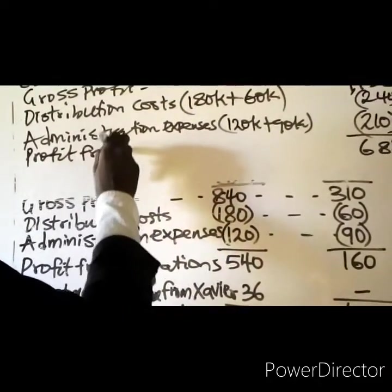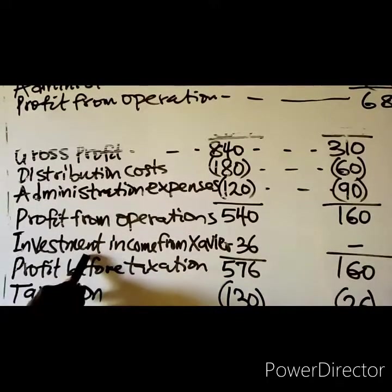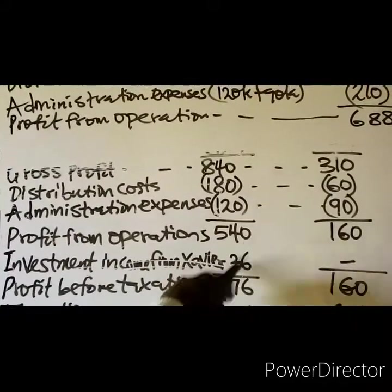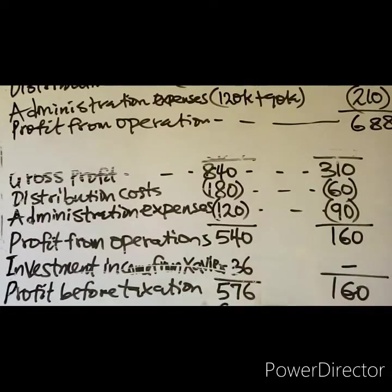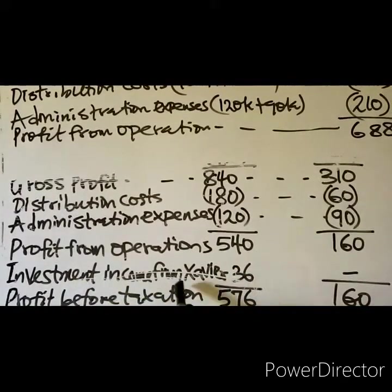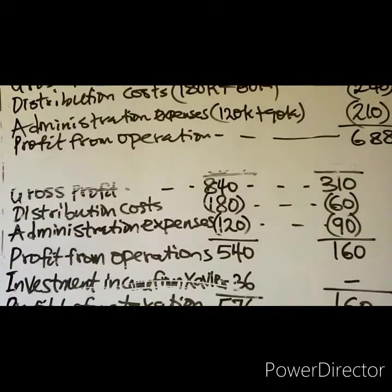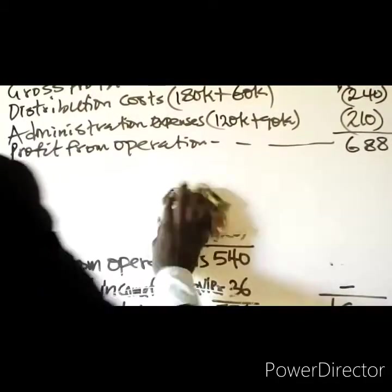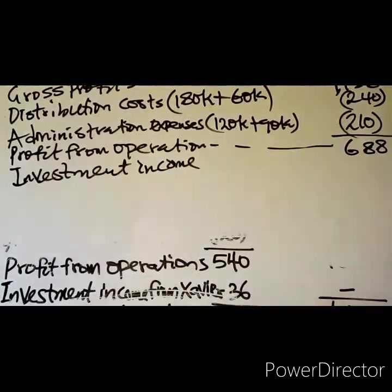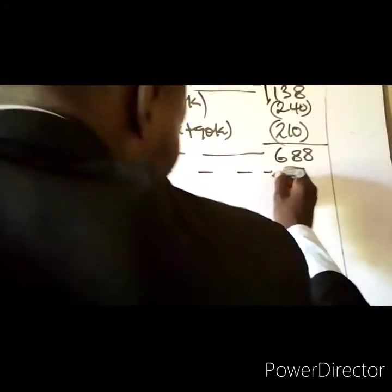After profit from operations, the next item is investment income from Zavia. This $36,000 was paid as dividend by Zavia to ZBD — it is intergroup. Intergroup dividends should be eliminated, so the $36,000 investment income is eliminated.